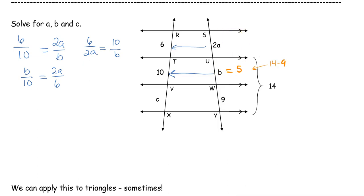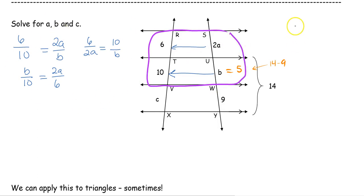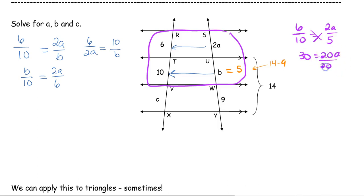Now I can use these four pieces to solve for a. We can use any of the patterns we set up — if I go 6 over 10, that's top to bottom on the left, top to bottom on the right. Cross multiply: 6 times 5 is 30, 10 times 2 gives us 20a. We divide by 20 and a equals 1.5.